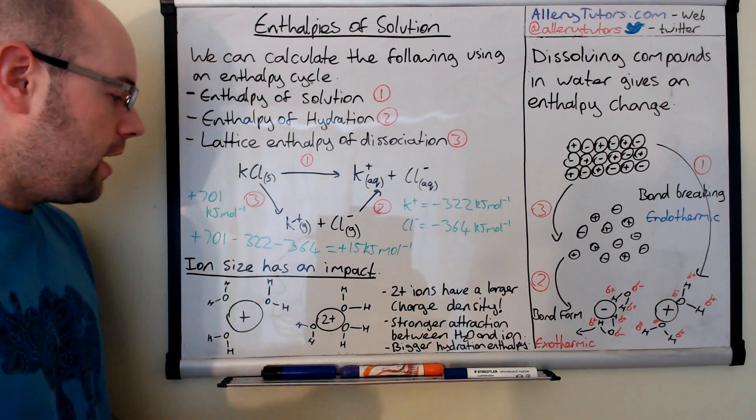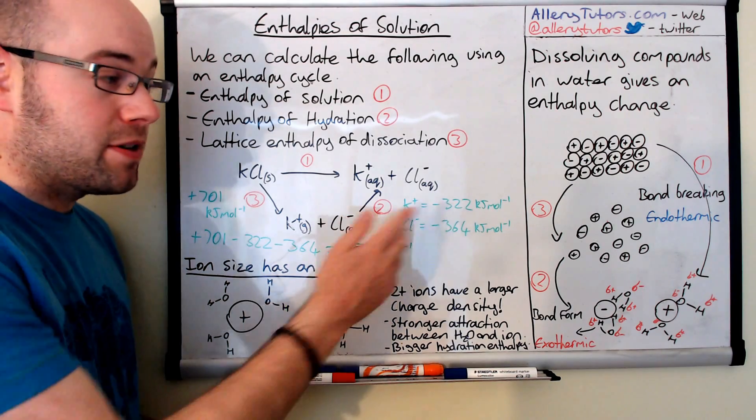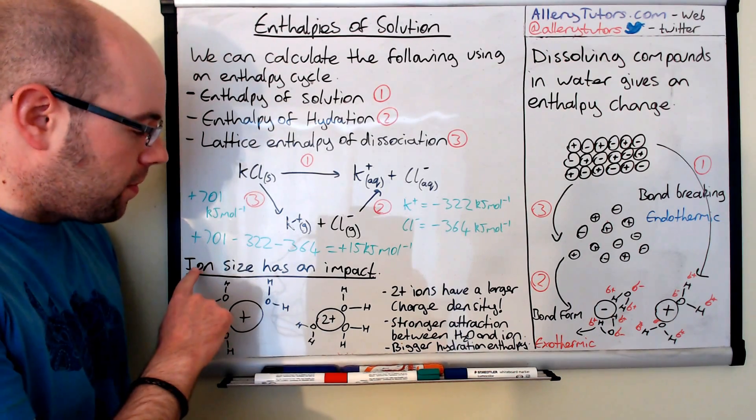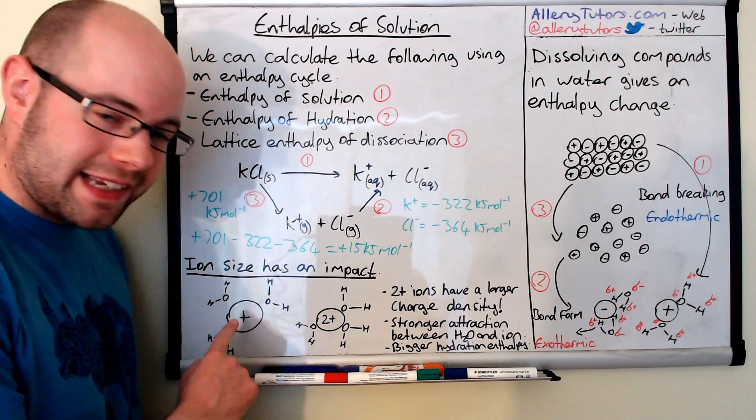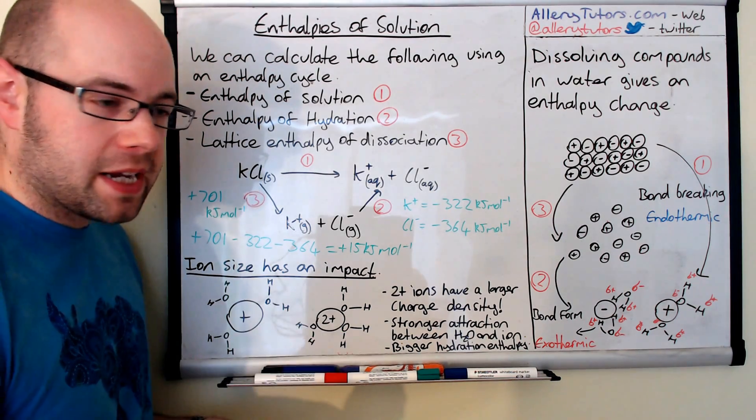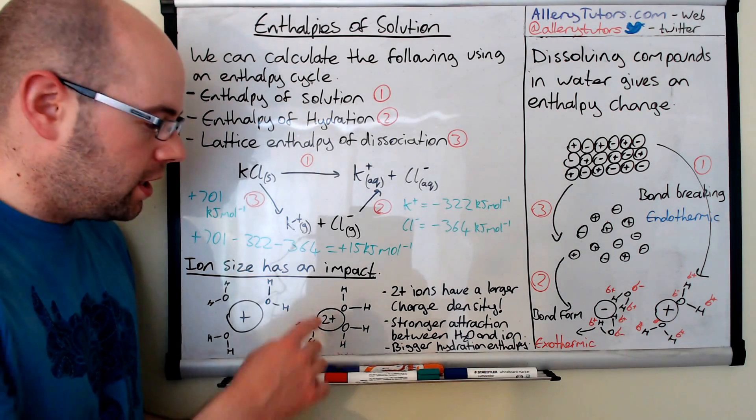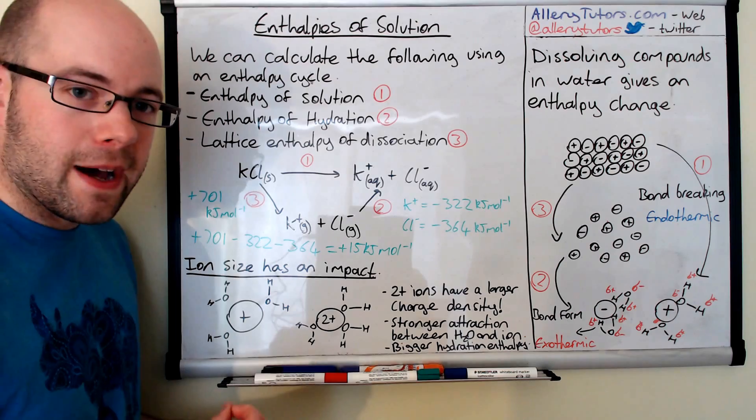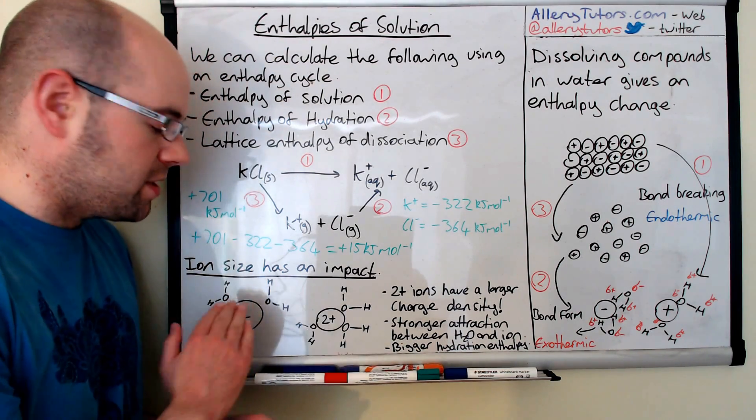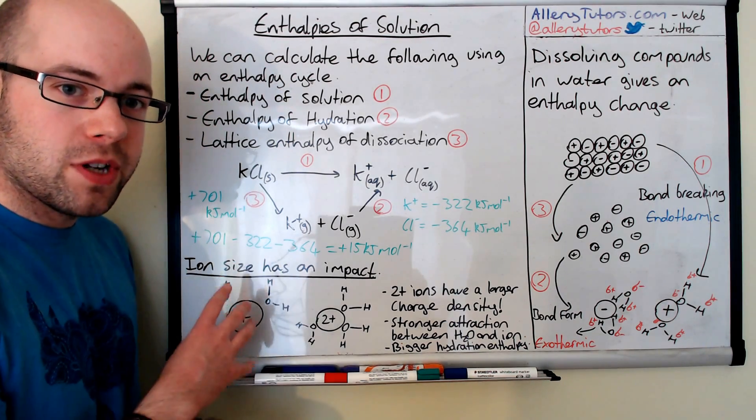Just the final thing, looking at ion size. Ion size has an impact or has an effect on the enthalpies of hydration that we've just calculated. So we can have the ion size itself. For example we might have a one plus ion and a two plus ion. Now something with a two plus charge has a bigger charge density. Therefore the water molecules are going to be more strongly attracted to the two plus charge than the one plus charge. That means that the enthalpy of hydration is going to be a lot larger for two plus ions than it is for one plus ions.